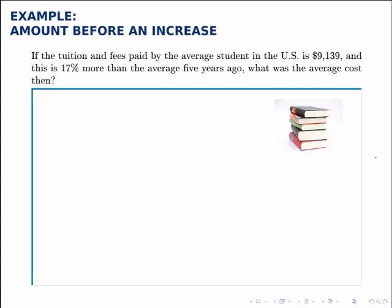If the tuition and fees paid by the average student in the US is $9,139, and this is 17% more than the average five years ago, what was the average cost then?